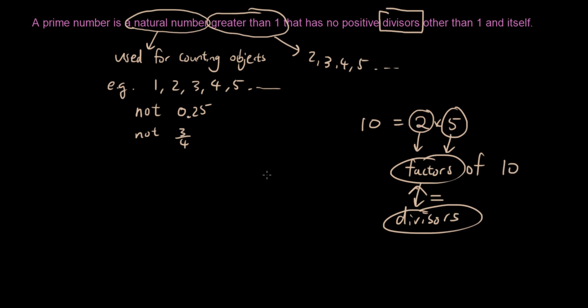So 2 is a factor of 10. Or you can say 2 is a divisor of 10. And 5 is also a factor of 10. Okay, because 5 times something will give you 10. And 2 times something will give you 10. So a prime number has no positive divisors other than 1 and itself.